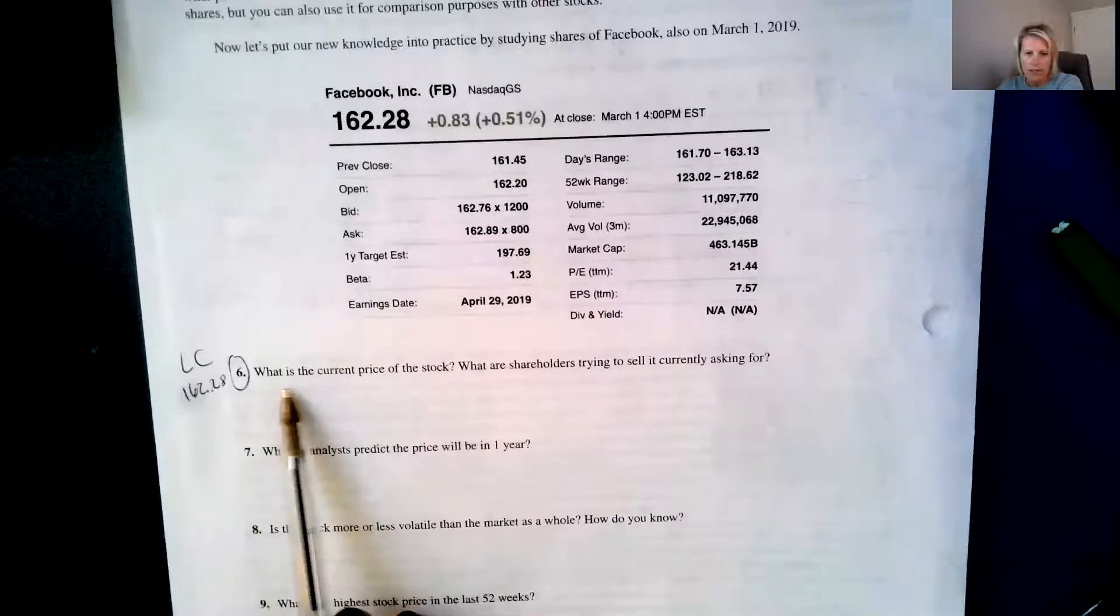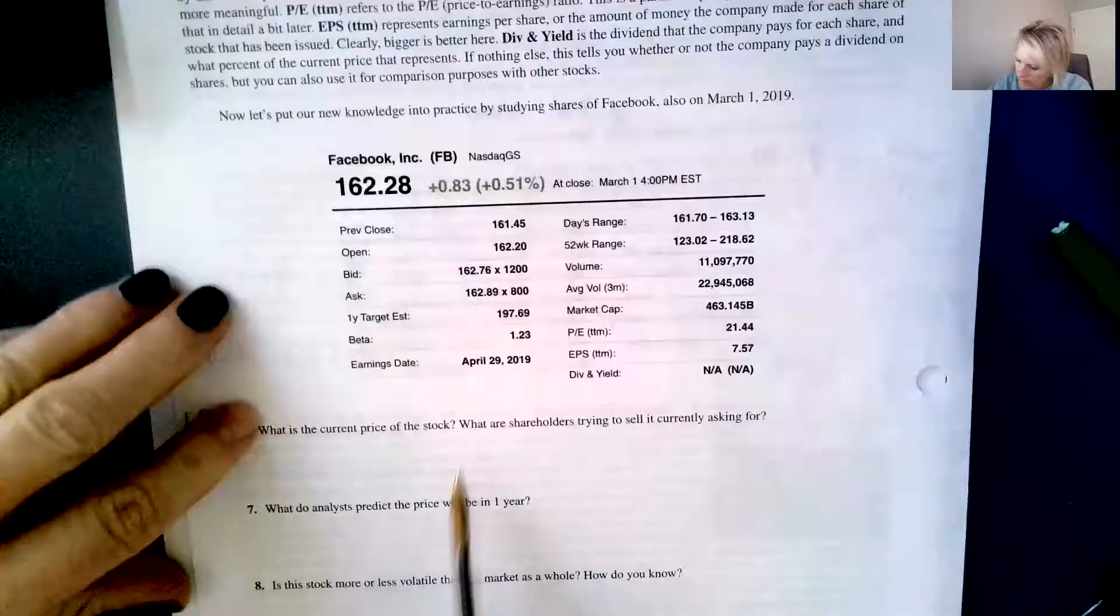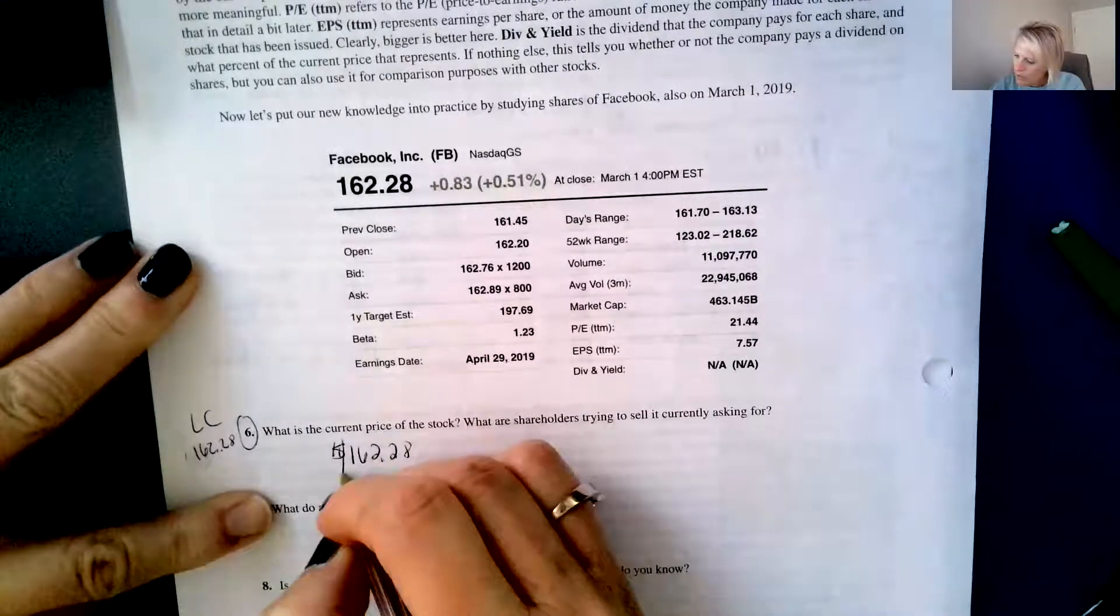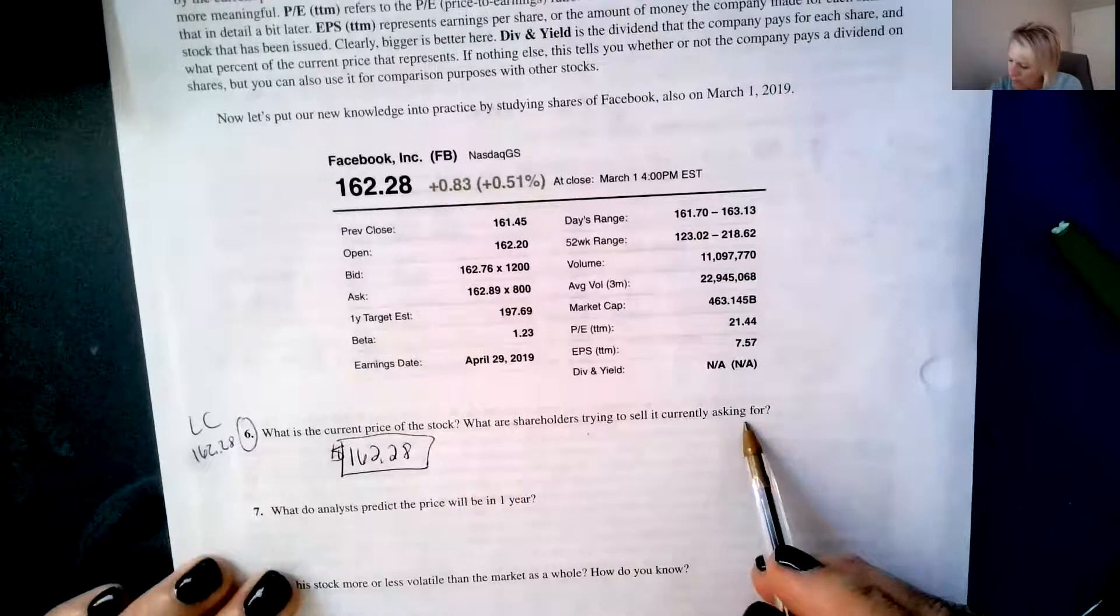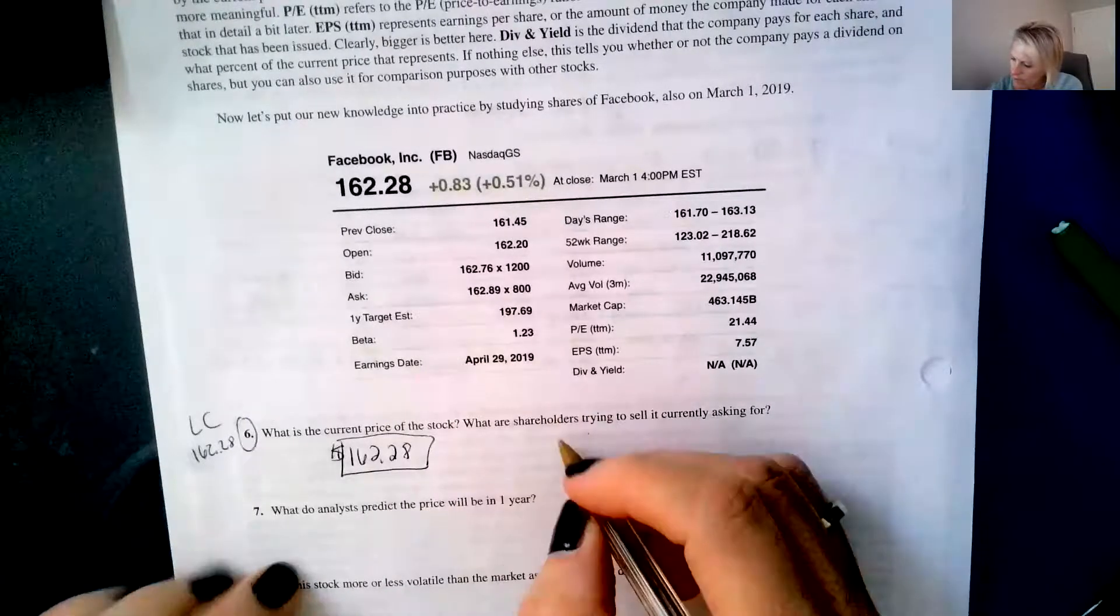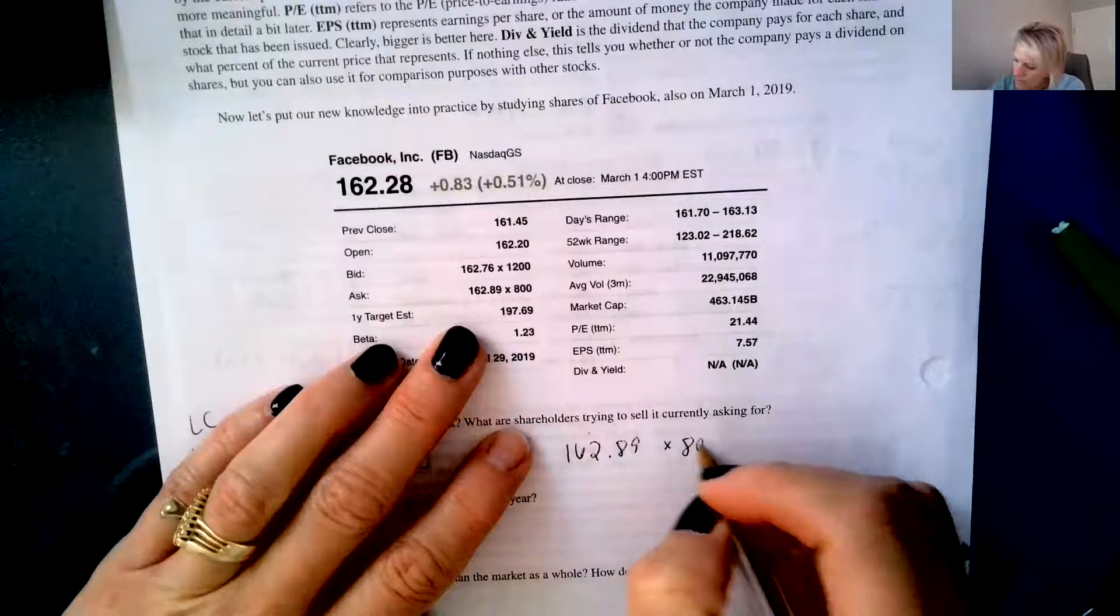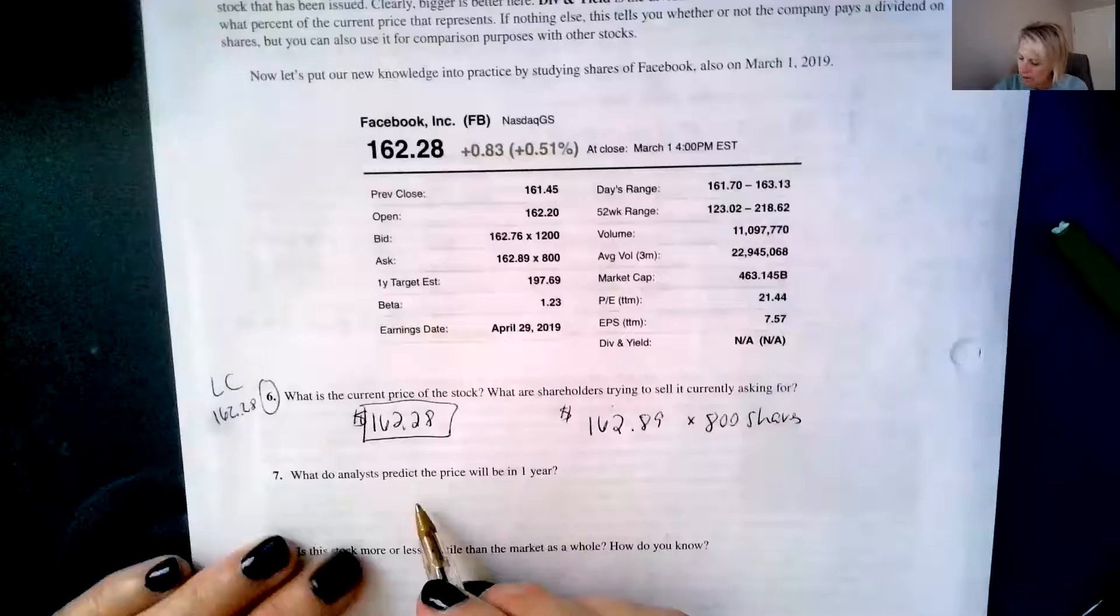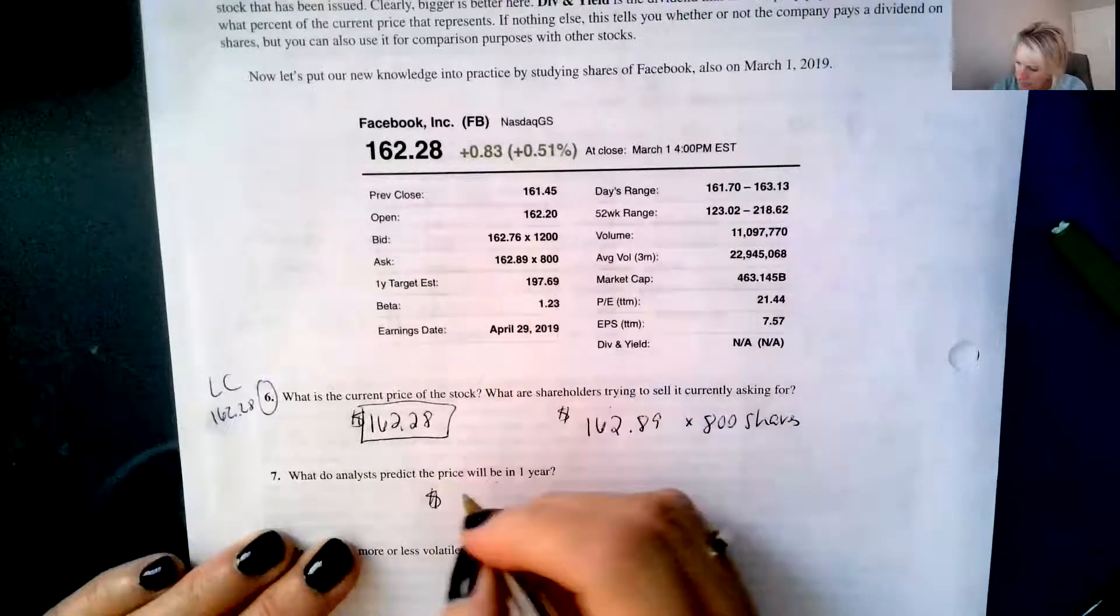So this is our lesson check number six. It says, what is the current price of this stock? We're looking at Facebook now. This is Facebook from March 1st, 2019. So the current price of the stock is 162 and 28 cents. I don't believe you need the dollar sign. What are shareholders trying to sell it currently asking for? So that would be the ask. So they're asking for 162.89 and 800 shares. What do analysts predict the price will be in one year? And that is the one year target estimate, which is 197.69. So they're expecting it to increase.